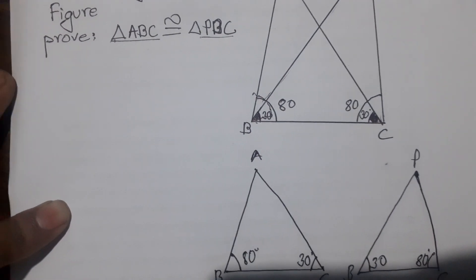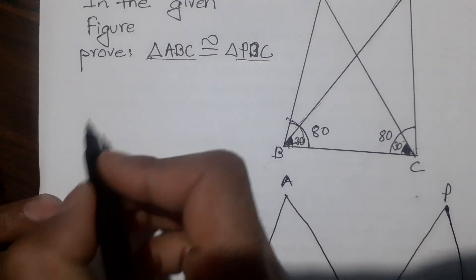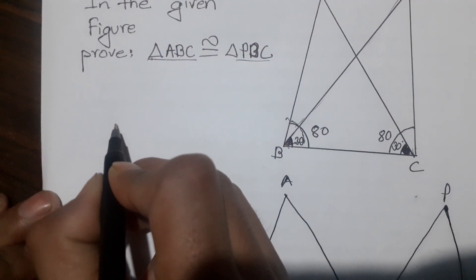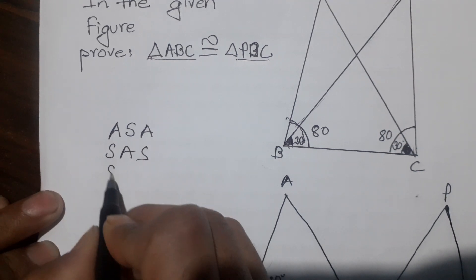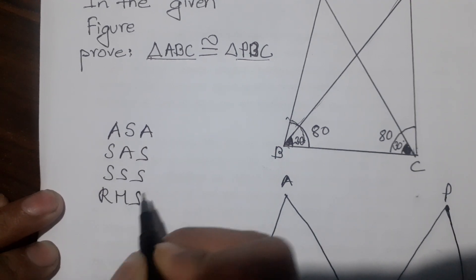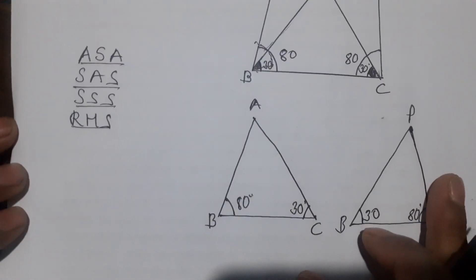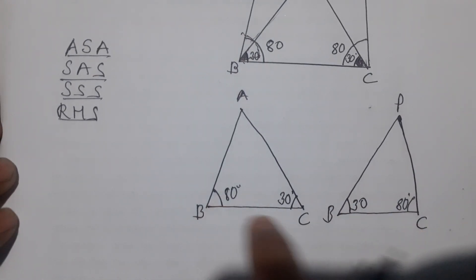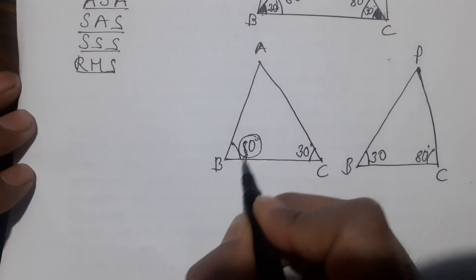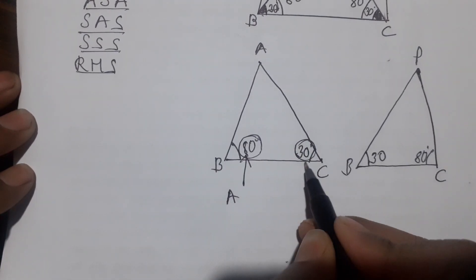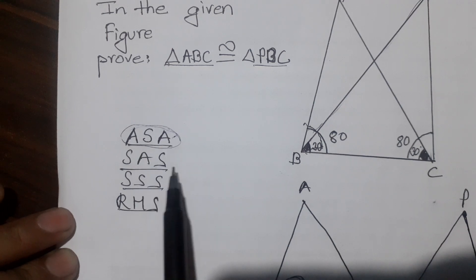So we need to prove what we need to do. We need different keys — we need to find a congruence criterion: ASA, SAS, SSS, RHS. So we need to find some key in class 9. We need to find one of the keys.